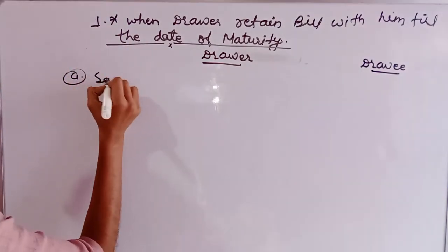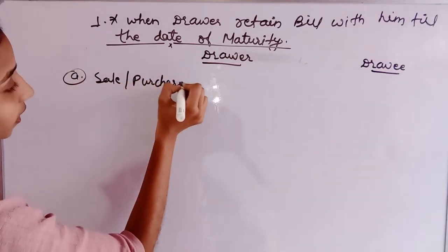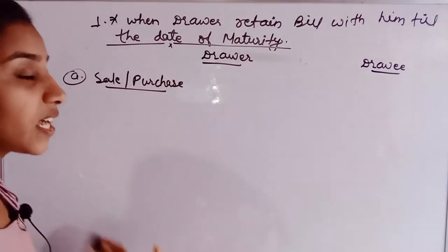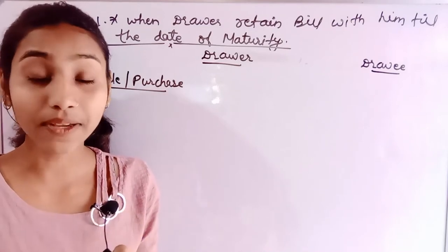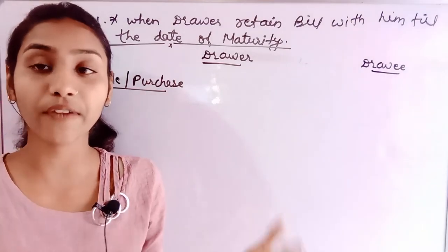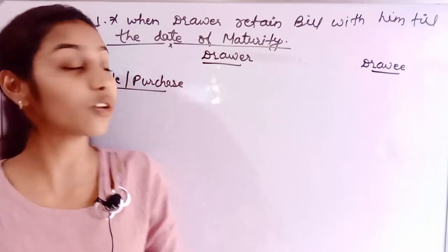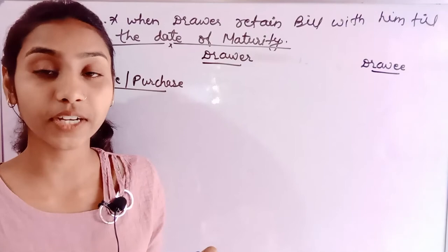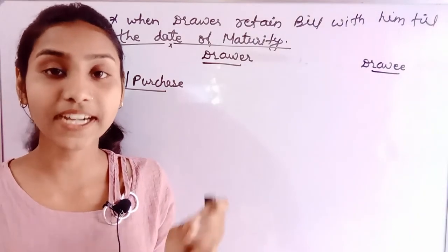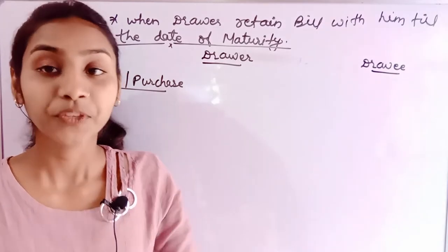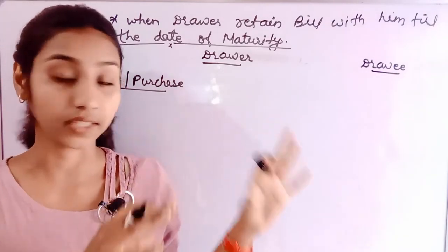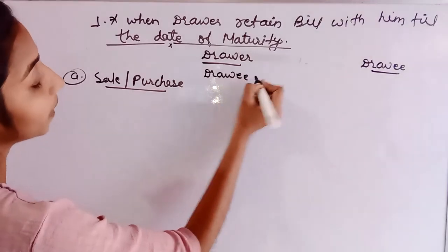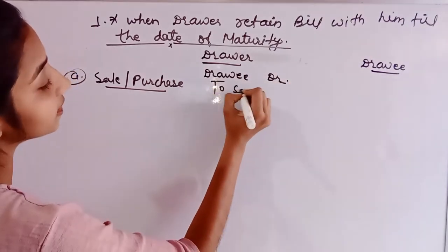First, let's add a heading: sell or purchase. If the drawer sells on credit, we do: Drawee Account Debit to Sales Account. Why do we debit the drawee? Because the drawee is a personal account — debit the receiver, credit the giver. The drawee receives the goods, so drawee is debited. Sales is our income, so by the nominal rule all incomes and gains are credited.